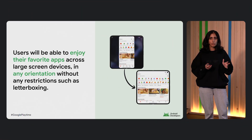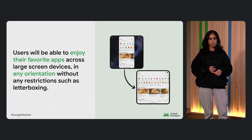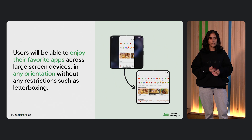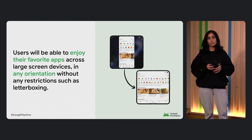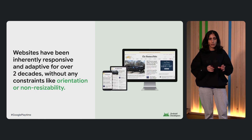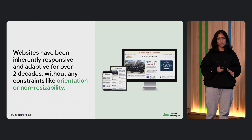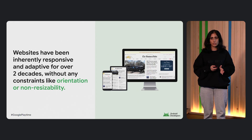What this means is that your users will be able to enjoy your app in multiple orientations without heavy compatibility modes that we've had to rely on in the past — things like pillar boxing that really did not offer the best possible experience and didn't take advantage of greater screen real estate. And I just want to highlight that this is not a new concept. Websites, for example, have been resizable and responsive for over two decades. So it's really time for the Android mobile app ecosystem to catch up.